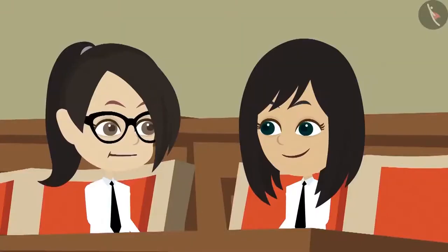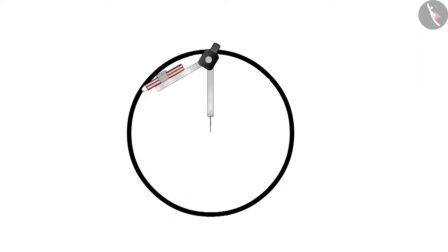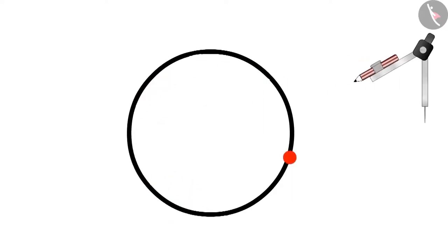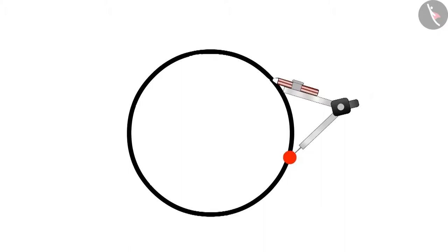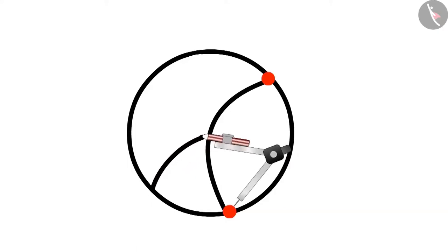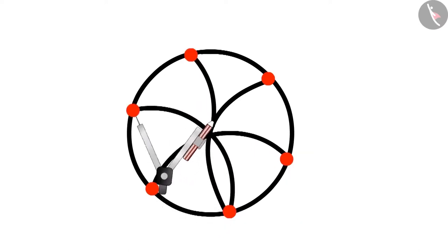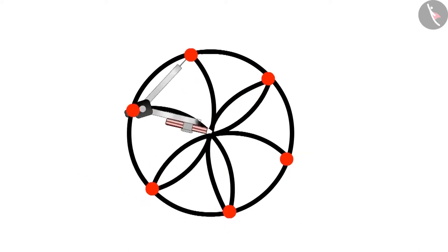The circle turned into a flower. Similarly, many designs can be made. Now I will try. Let's draw a circle. Now draw a circle inside this circle by taking any point on the boundary of the circle. Now see the points on the boundary of the main circle where the edges of this circle are meeting. Draw circles from these points too. Repeat the process till a complete design is created.